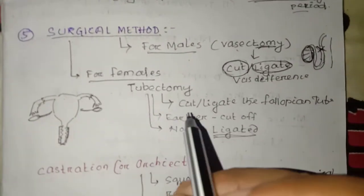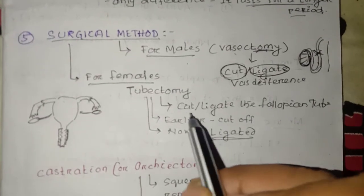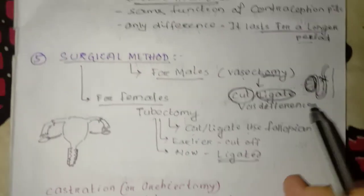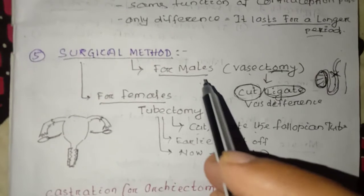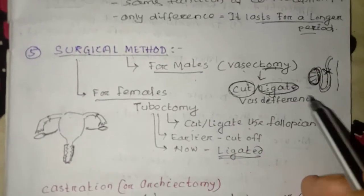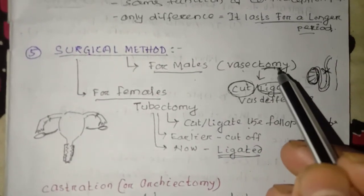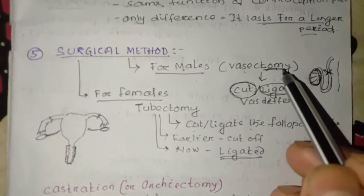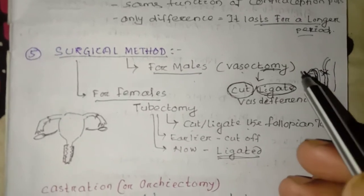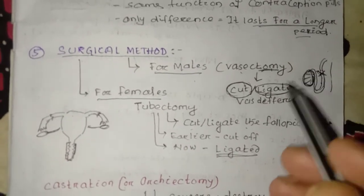The female sterilization method is also a good method. It involves the surgical removal of part of the reproductive tract.